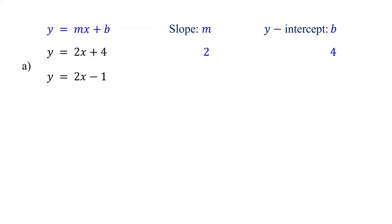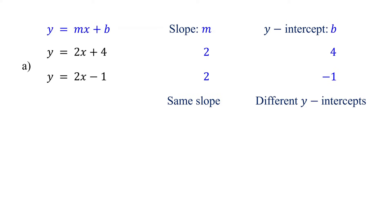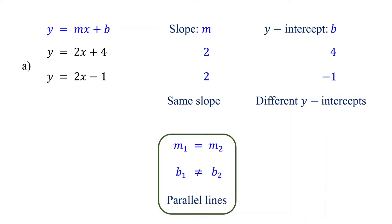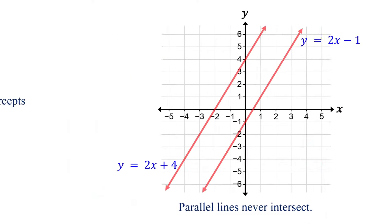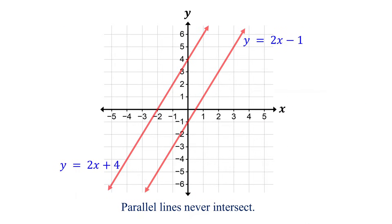In the second equation, the slope is also 2, but the y-intercept is negative 1. Next, compare the slopes and y-intercepts. Notice both equations have the same slope but different y-intercepts. Two lines with the same slope but different y-intercepts are parallel. Therefore, these equations represent parallel lines. If you graph them, you will see that the lines never intersect, confirming they are parallel.